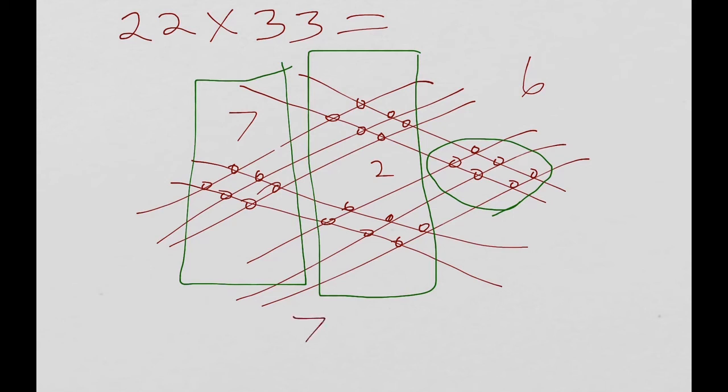And we have our answer: 726. So the answer to 22 times 33 is 726. It's that simple.